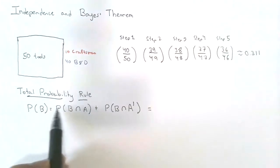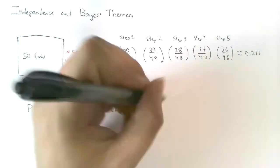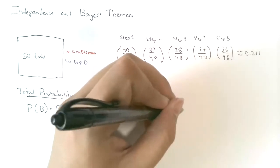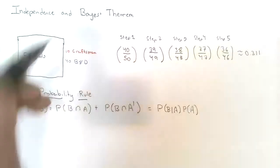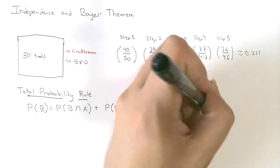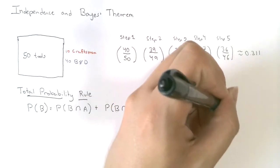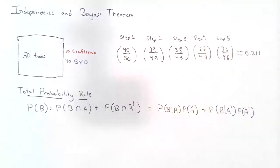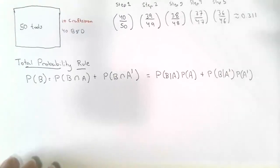The multiplication rule tells us that the probability of an intersection equals the conditional probability times the probability of the first event that occurred. So the probability of B cap A is the conditional probability of B given A times the probability of A. And the probability of B cap A prime is the conditional probability of B given A prime times the probability of A prime. Let's try to see where this equation comes from graphically.